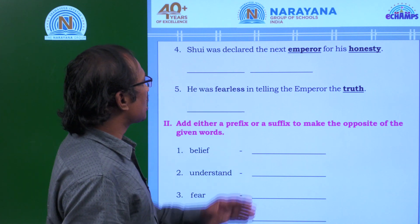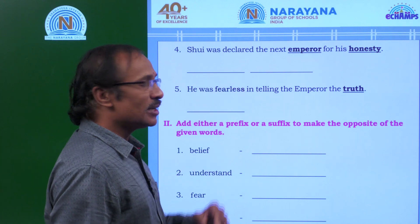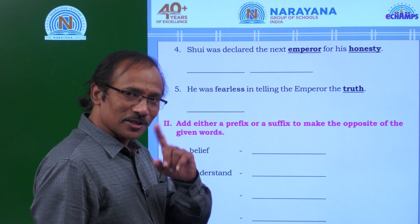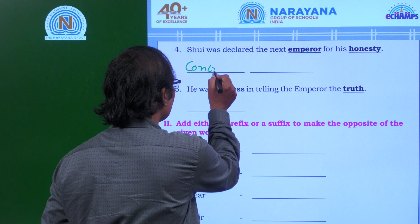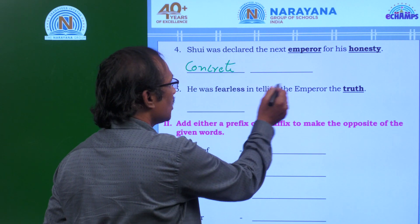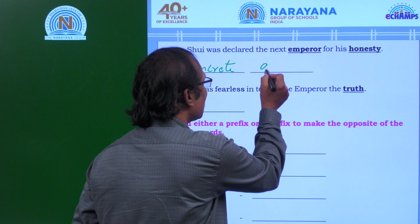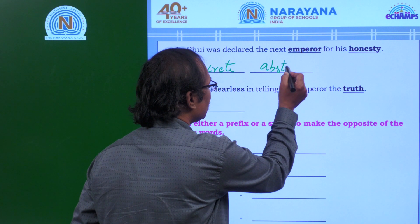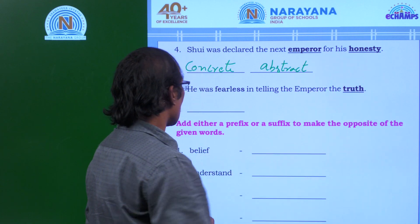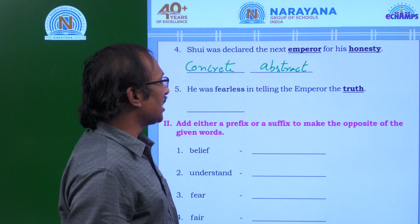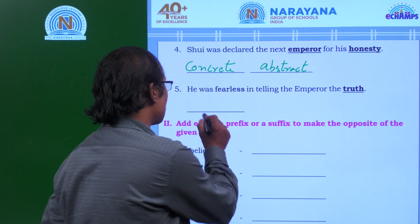Shui was declared the next emperor for his honesty. Emperor is a common noun, so it is concrete. Honesty is a feeling, so it is abstract. He was fearless in telling the emperor the truth. Truth is abstract.